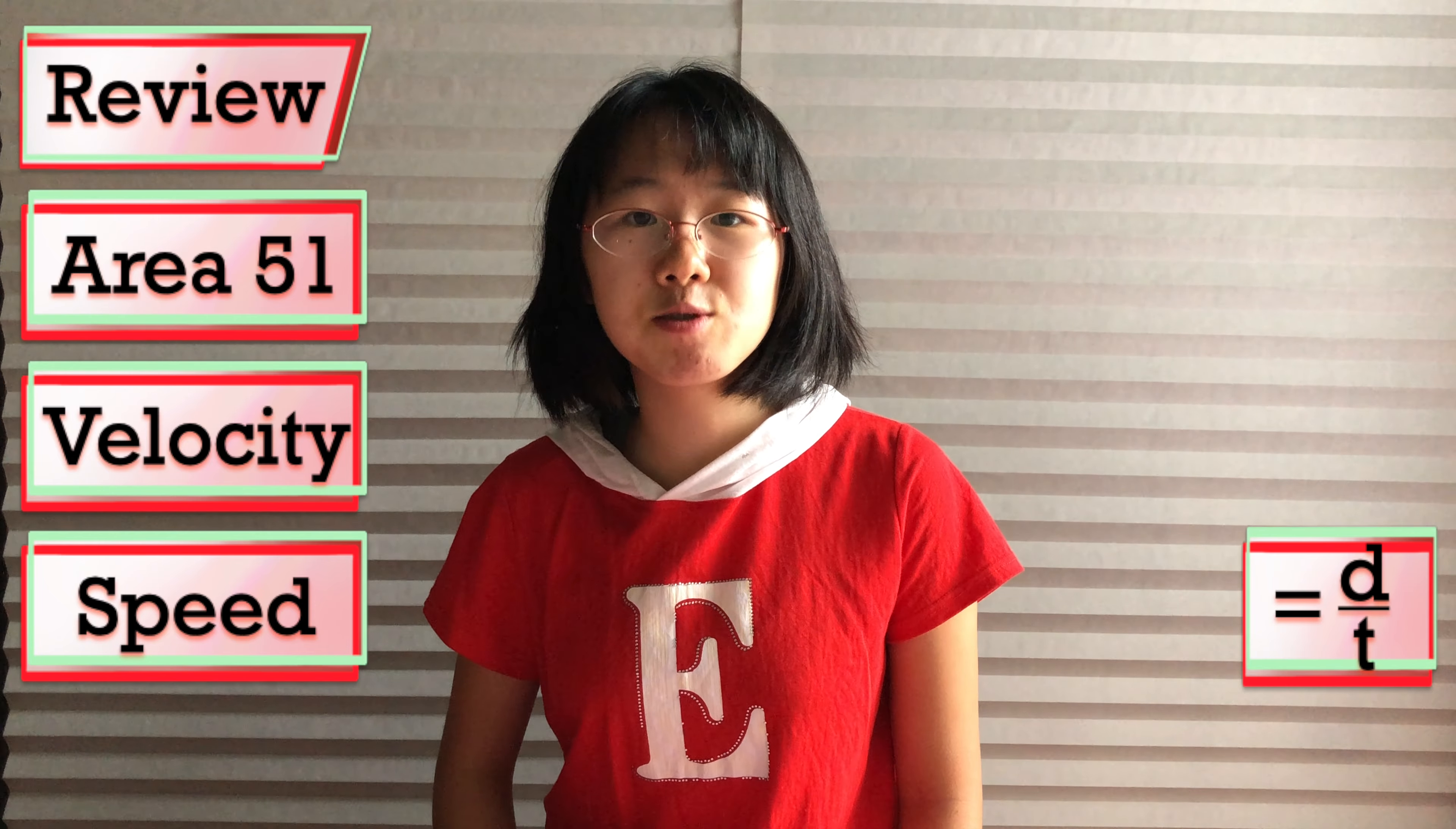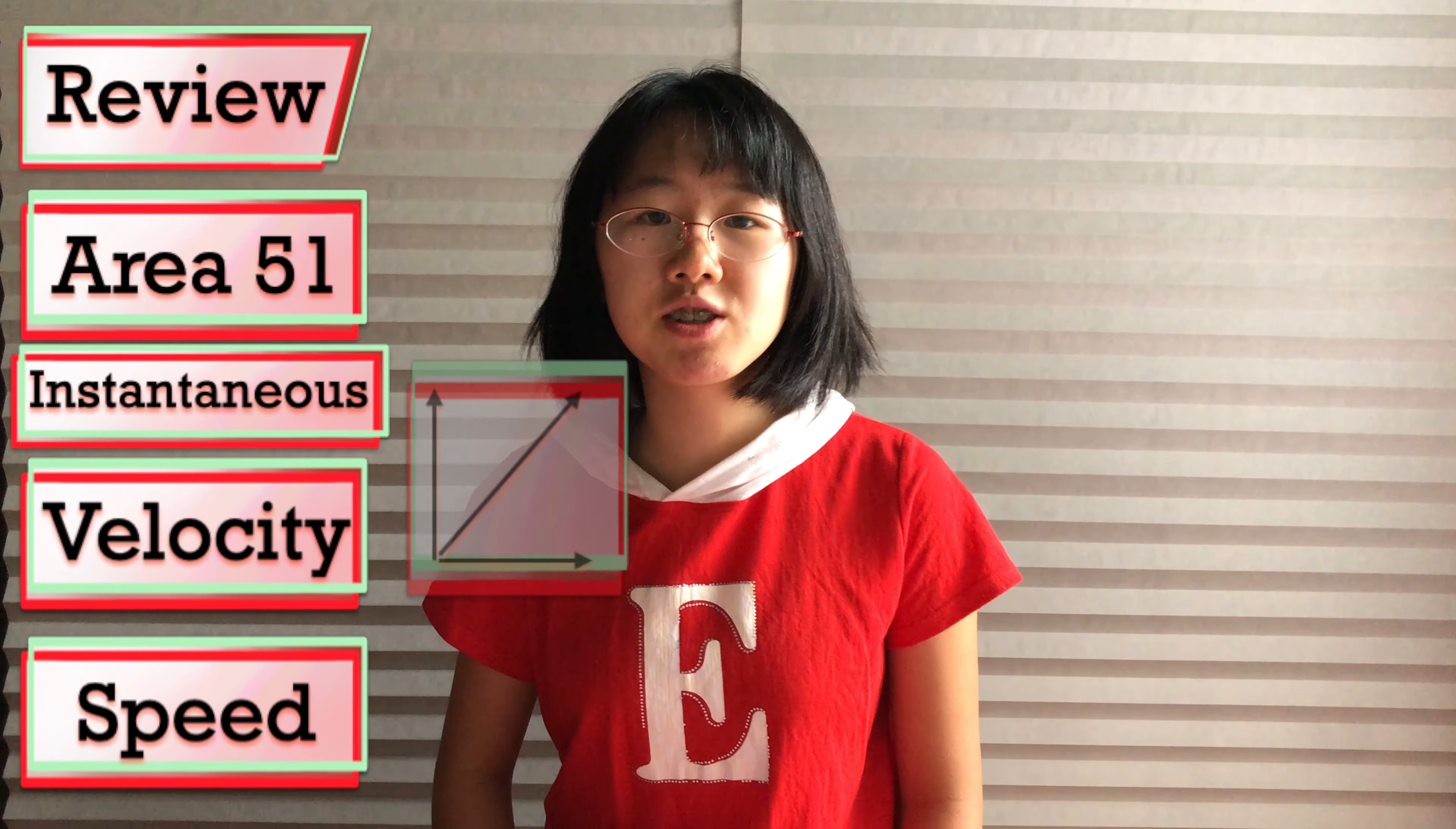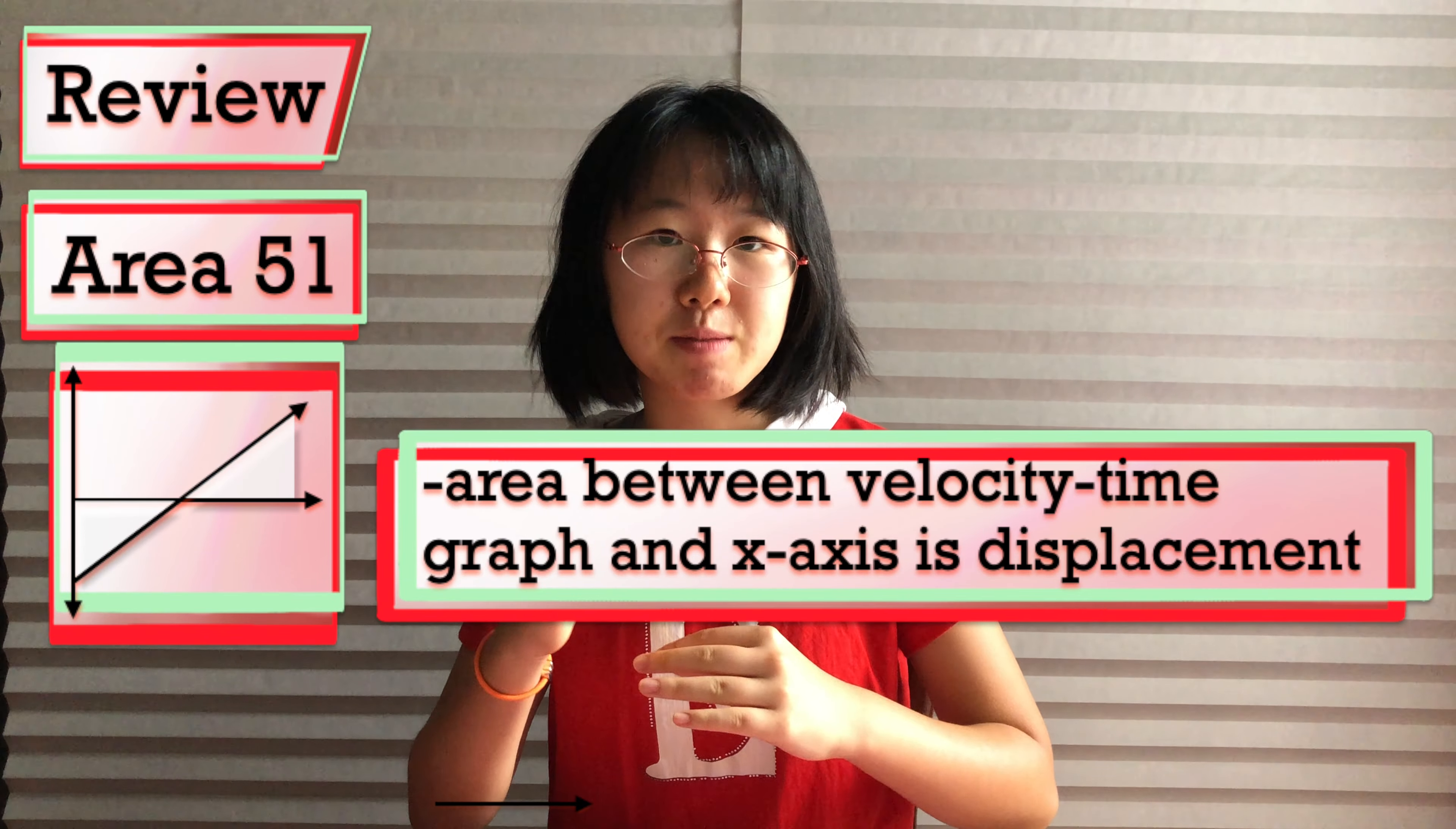In the last video, we talked about Area 51 velocity and speed, go check it out if you haven't seen it yet. We saw that speed is the distance you travel in a certain amount of time, and that velocity is changing position over time, giving it a direction as well as a magnitude. Your instantaneous velocity on a position time graph is the slope of the line, while instantaneous speed is the slope's absolute value. Finally, finding the area of the space between the velocity time line and the x-axis gives you our displacement.